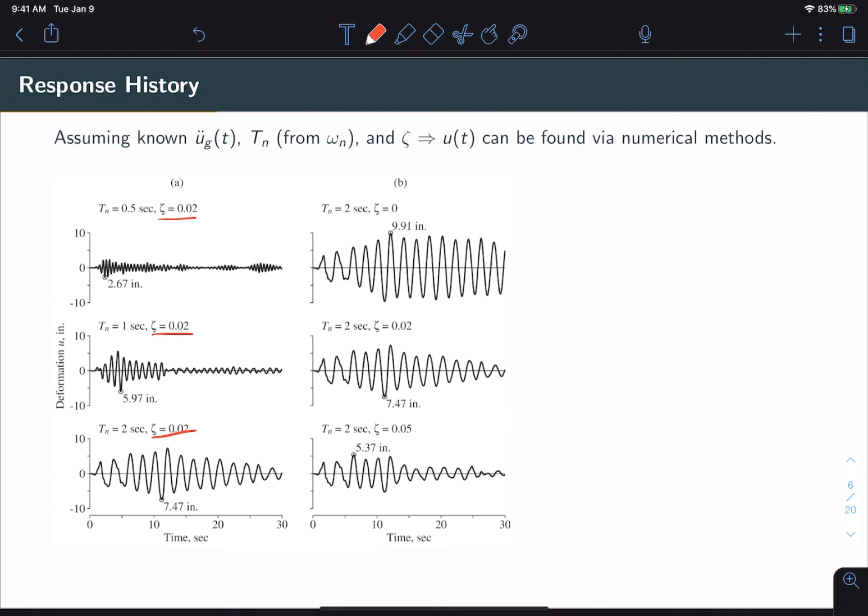Now, the first thing I want you to notice is that in this analysis we don't care what the structure actually looks like. In other words if we take the case of Tn equal to 1, this would imply of course that omega n is equal to pi.